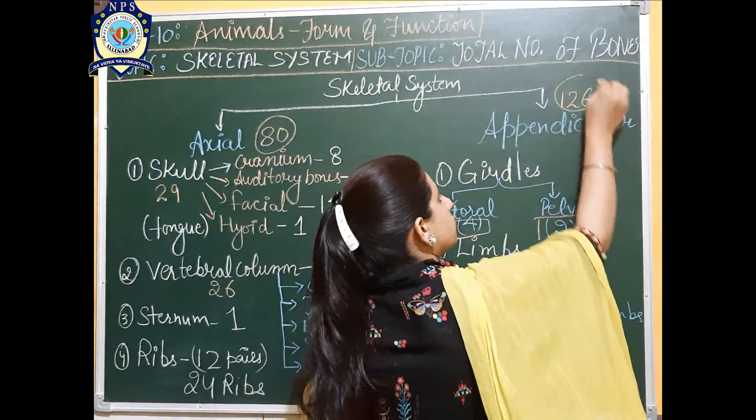The axial skeleton has 80 bones and the appendicular skeleton has 126 bones. When combined, they form the total number of bones in the human body: 206 bones. An adult human has 206 bones. The number of bones may vary in infants, as newborn babies have more bones than adults. As they grow, the bones fuse together, resulting in 206 bones in the adult human skeletal system.